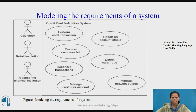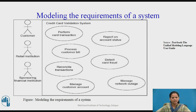The figure expands on the previous use case diagram. Although it shows the relationships among the actors and the use cases, it adds additional use cases that are somewhat invisible to the average customer, yet are essential behaviors of the system. This diagram is valuable because it offers a common starting place for end users, domain experts and developers to visualize, specify, construct and document their decisions about the functional requirements of this system. For example, detect card fraud is a behavior important to both the retail institution and the sponsoring financial institution. Similarly, report on account status is another behavior required of the system by the various institutions in its context.